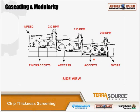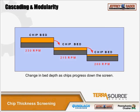Speed changes down the screen: the first section runs at 230 RPM where fines and some accept chips pass through. The second section is at 215 RPM, and the third section at 200 RPM. This shows a three-module screen — terminology: 10 by 24, three eight-foot sections. A fourth module for 10 by 32 would also be at 215 RPM, so the sequence would be 230, 215, 215, and 200. The initial thick chip bed needs more speed to keep moving; as chips fall through and the bed depth lessens, you don't need to run as fast.